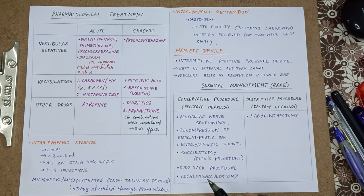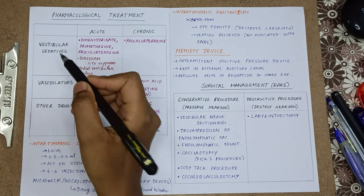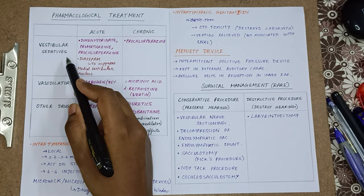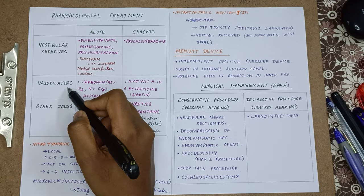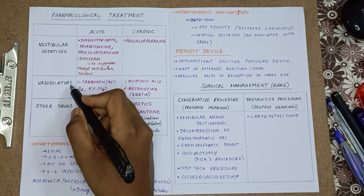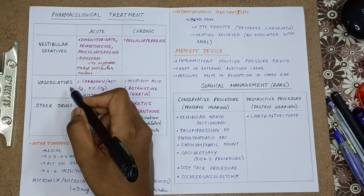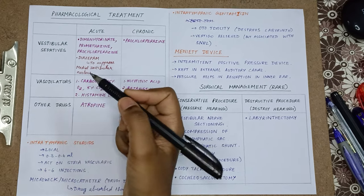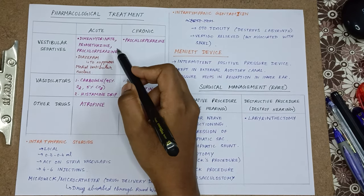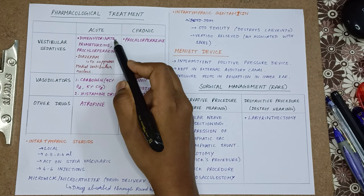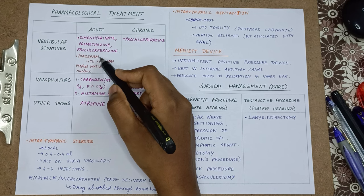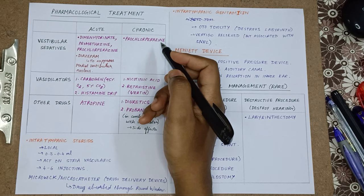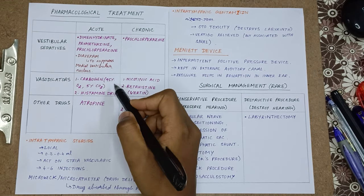Pharmacological treatment includes vestibular sedatives, vasodilators, and other drugs. Vestibular sedatives depress vestibular action and reduce vertigo. Vasodilators improve vasoconstriction, which corrects defects in neurosensory epithelium, hence improving deafness and vertigo. For acute cases, vestibular sedatives include dimenhydrinate, promethazine, prochlorperazine, and diazepam — diazepam suppresses the medial vestibular nucleus. For chronic cases, prochlorperazine is given. Vasodilators are carbogen (95% O2 and 5% CO2) and histamine drip. For chronic cases, nicotinic acid and betahistine are given.